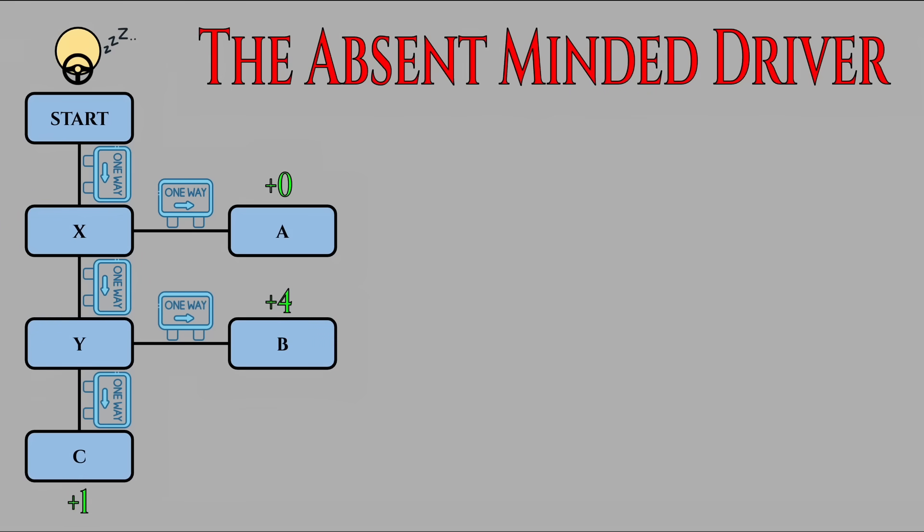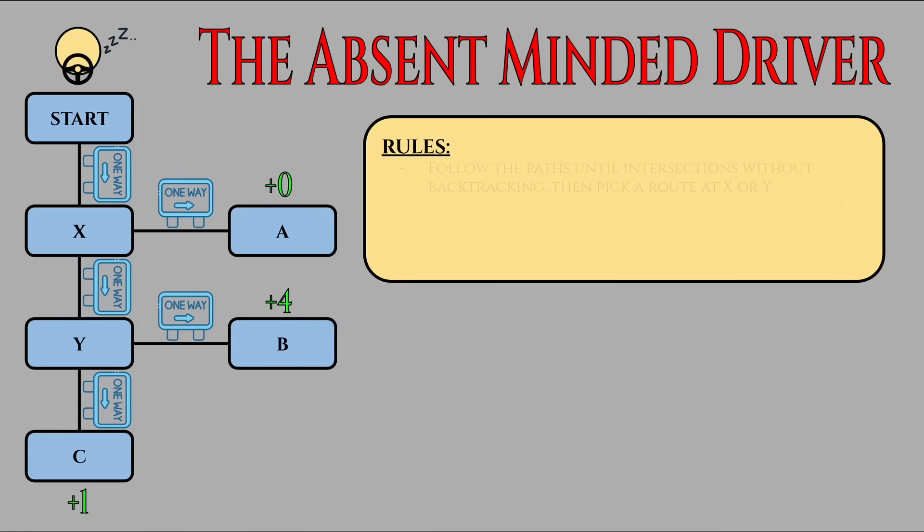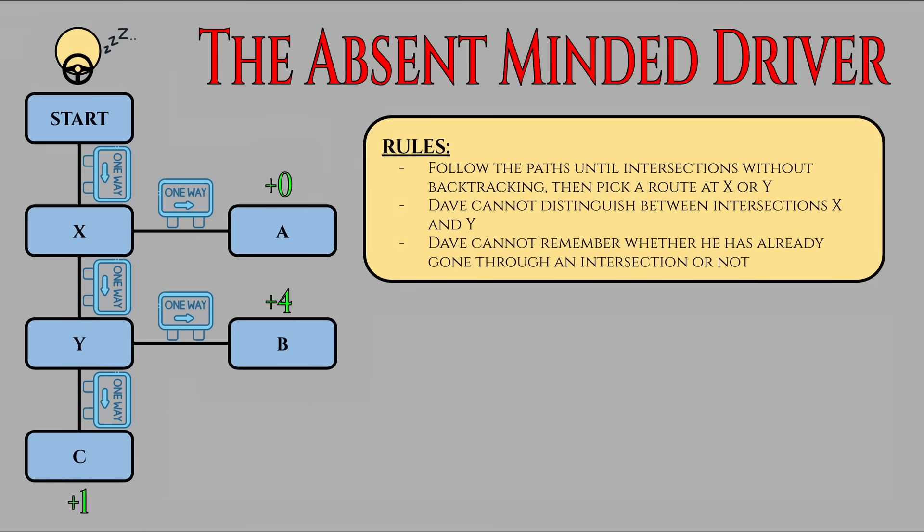For a more formal description of the problem, we can read the abstract itself. An absent-minded driver starts driving at a start, from the picture shown on the screen. At X, he can either exit and get to A for a payoff of zero, or continue to Y. At Y, he can either exit and get to B, which is payoff four, or continue to C, which is payoff one. The essential assumption is that he cannot distinguish between intersections X and Y, and cannot remember whether he's already gone through one of them. Given these conditions, how can the driver maximize his utility?